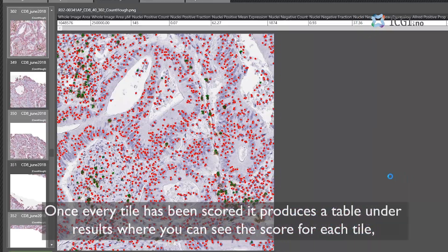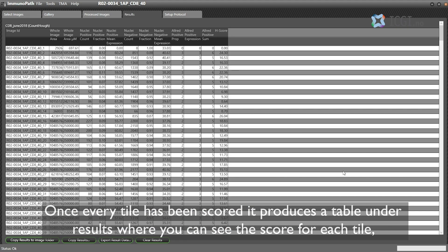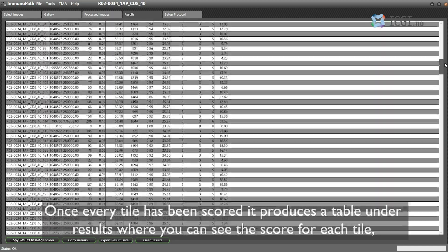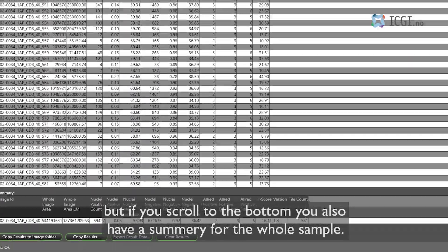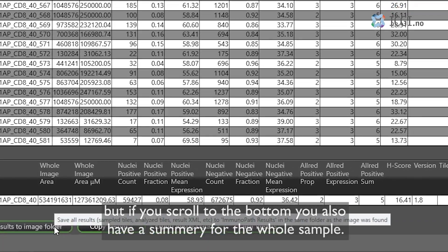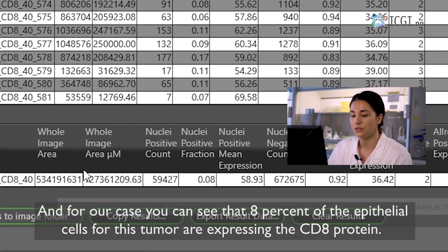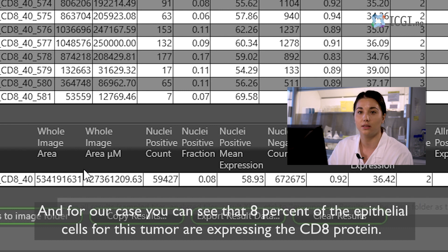Once every tile has been scored it produces a table under results where you can see the score for each tile. But if you scroll to the bottom you also have a summary for the whole sample. And for our case you can see that 8% of the epithelial cells for this tumor are expressing the CD8 protein.